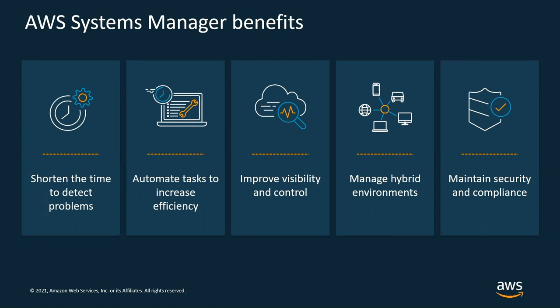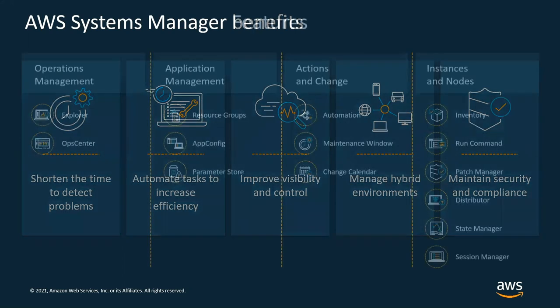Let me give you an example. If you have an application that uses EC2, S3, and RDS, you can use Systems Manager to create a resource group for that application. Then you can see the software installed on the EC2 instance, change S3 objects or database instances, and see if they have stopped — all from one console. It also helps automate tasks.